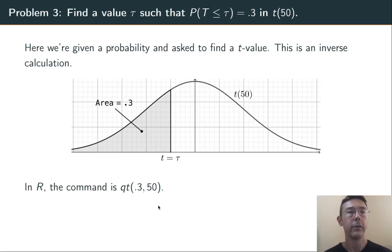R has a built-in function for the inverse CDF function for the t-distribution, namely Qt. In this case, we're doing Qt of 0.3, 50. The two arguments, the probability, and the number of degrees of freedom.